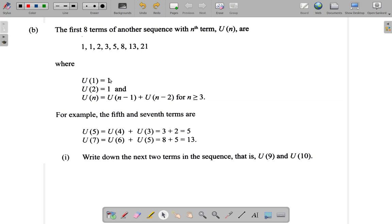Where U(1) = 1, U(2) = 1, and U(n) = U(n-1) + U(n-2) for n greater than or equal to 3.